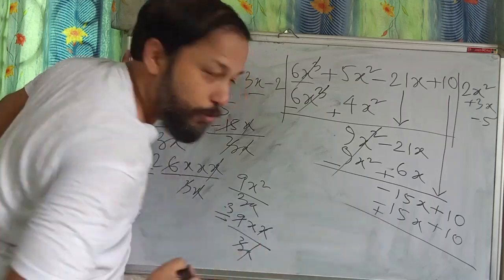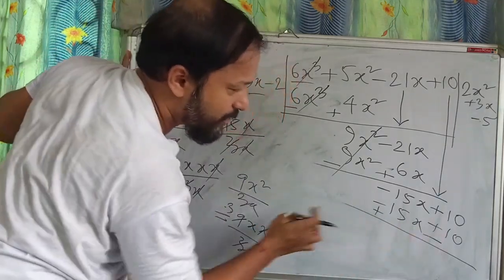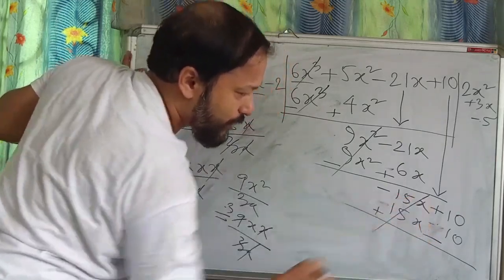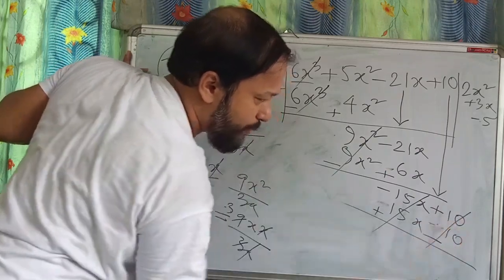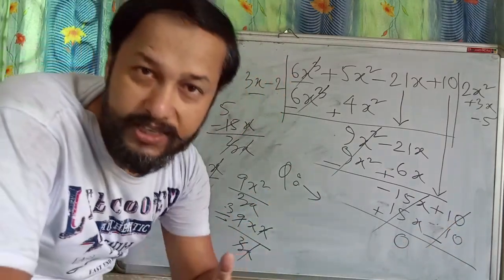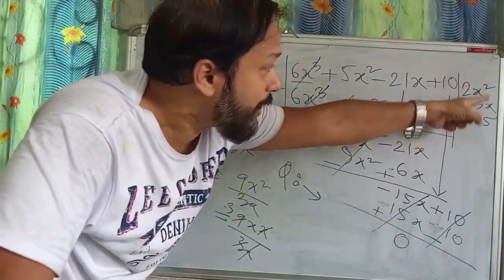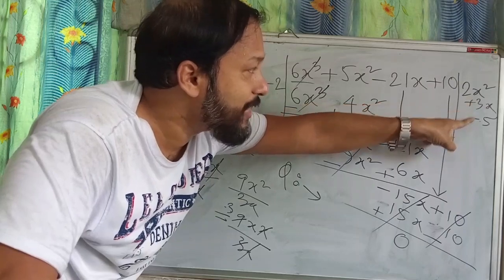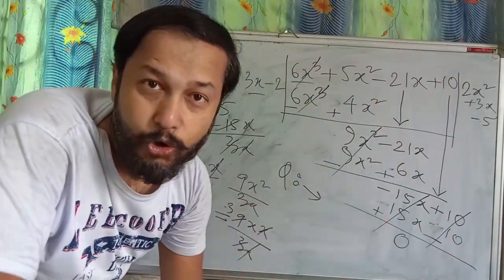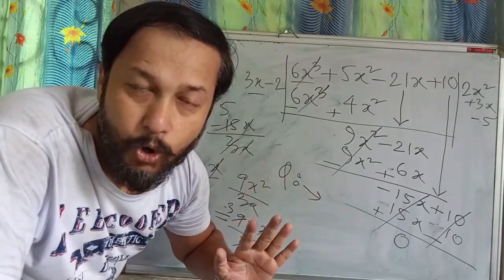Change the sign: minus becomes plus, plus becomes minus. Minus 15x becomes plus 15x, and plus 10 becomes minus 10. So plus 15x cancels with minus 15x, and plus 10 minus 10 cancels — remainder is zero. Quotient is 2x² plus 3x minus 5. Always declare the quotient and remainder at the end.